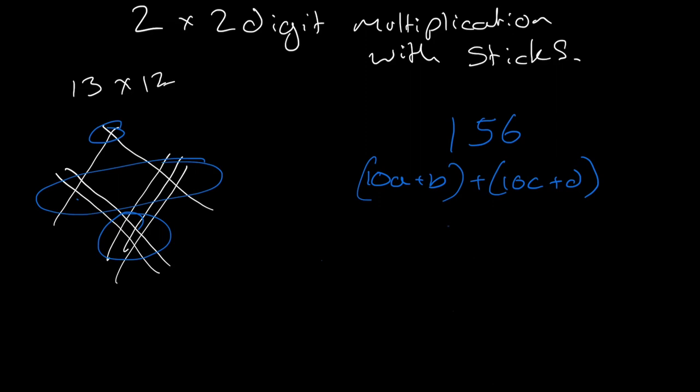So if you multiply this out, it becomes easier to see what's going on. So you get 100AC plus 10AD plus 10BC plus BD. So it's a pretty simple expansion, but you can quite easily see here that the BD, which would be the 2 by 3 which is represented down here, becomes our 6.